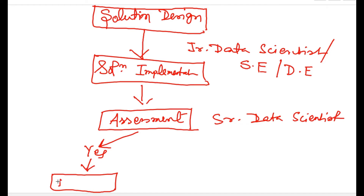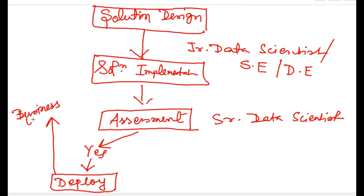If the desired outcome is achieved and the assessment is positive, you transfer it back to the business analyst or the business through a deployment team — essentially junior data scientists, software developers, and data engineers. Once deployed, the business analysts and end users review how good the solution was, completing the entire data science flow.